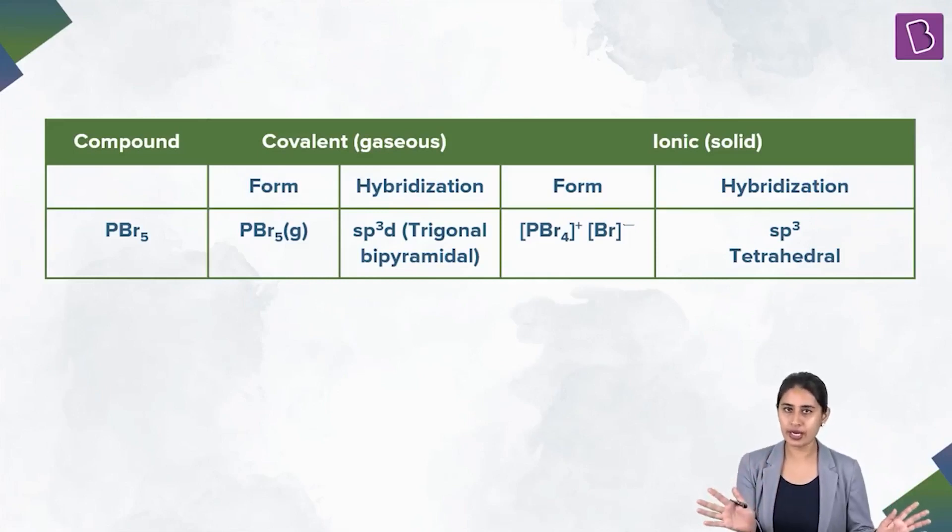What about PCL5 we have just done? It exists as covalent as well as ionic. If nothing mentioned, we write TBP. But specifically, if it is mentioned that we are talking about ionic state, write down properly.